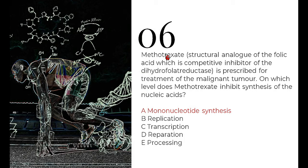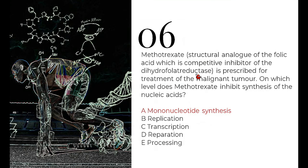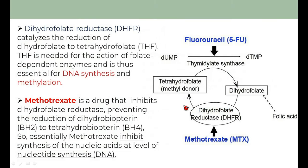The sixth question: methotrexate is a structural analog of folic acid and a competitive inhibitor of dihydrofolate reductase, prescribed for treatment of malignant tumors. They ask at what level methotrexate inhibits nucleic acid synthesis. Methotrexate inhibits DNA synthesis. To understand, consider dihydrofolate reductase: UMP (uracil mononucleotide) is converted into thymidine monophosphate (TMP) by the enzyme thymidylate synthase.